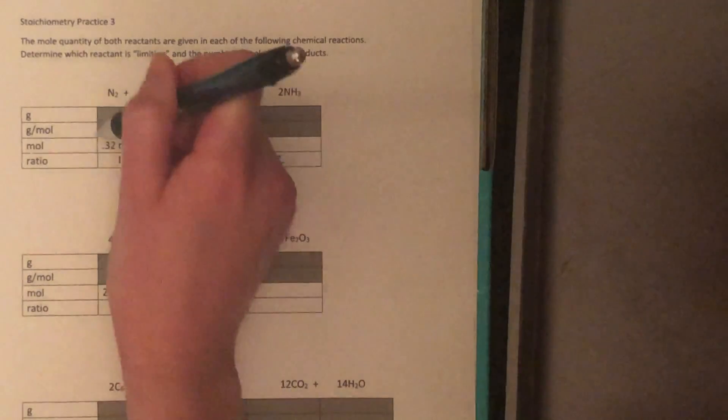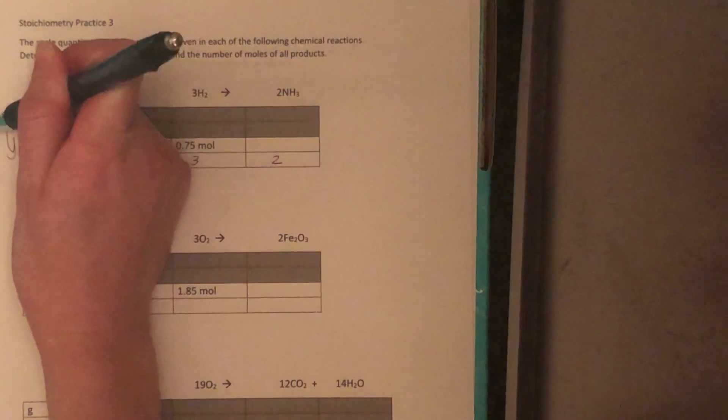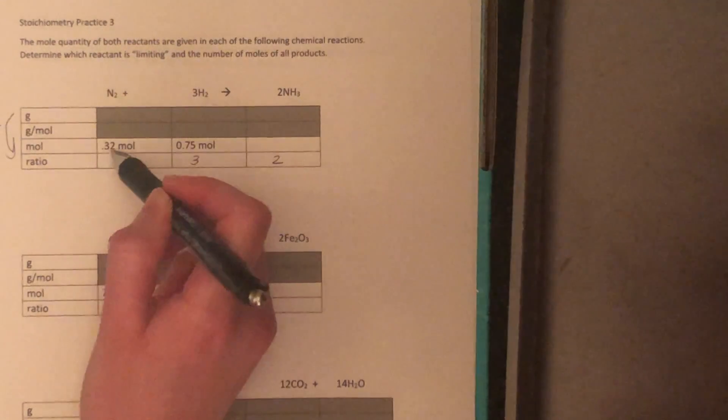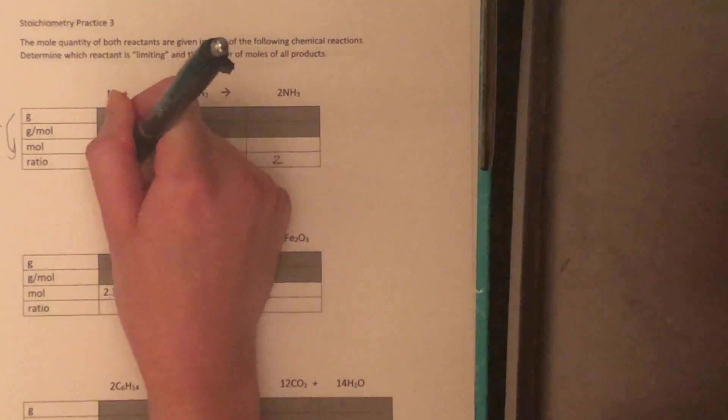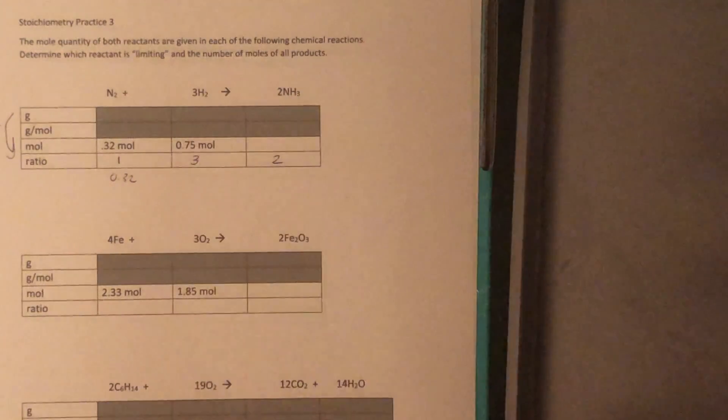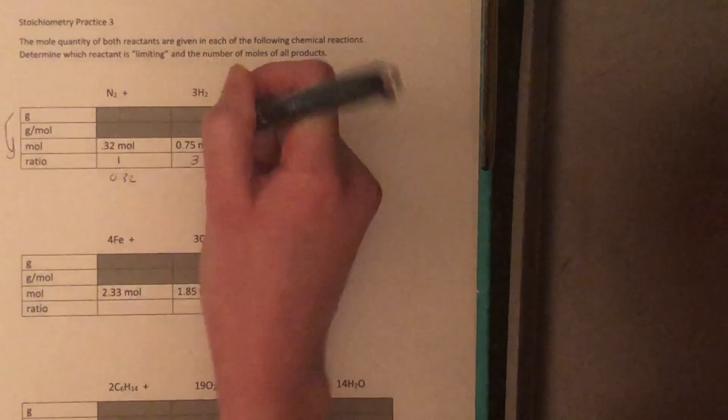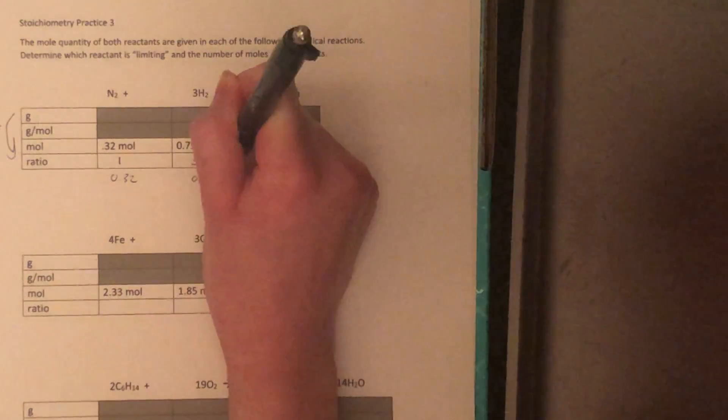What we're going to do is, since we go down, we divide. We're going to divide 0.32 by one. That gives us 0.32. And then we're going to divide 0.75 by three. And that gives us 0.25.